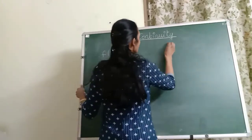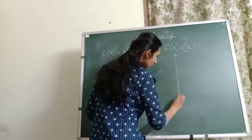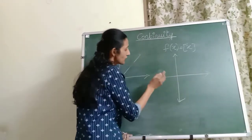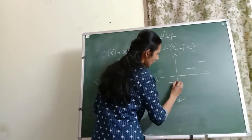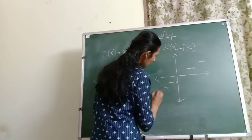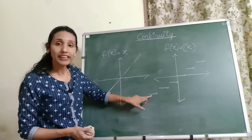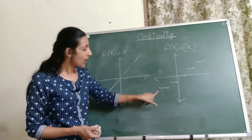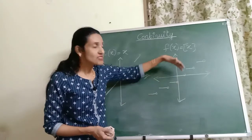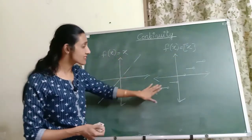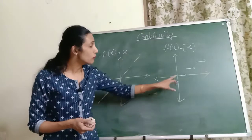Now let's see another function — the greatest integer function, also called the step function, because you will see a series of nice steps. This is how the function looks. In each step-segment, there is no break or interruption, but between the steps there is a big break. So there are some regions where the graph is continuous, but there are also some regions where there are big breaks or interruptions.